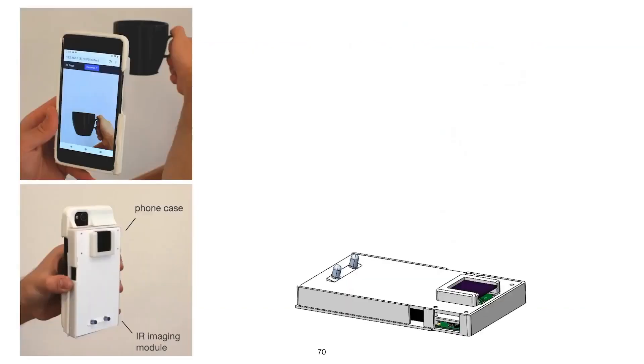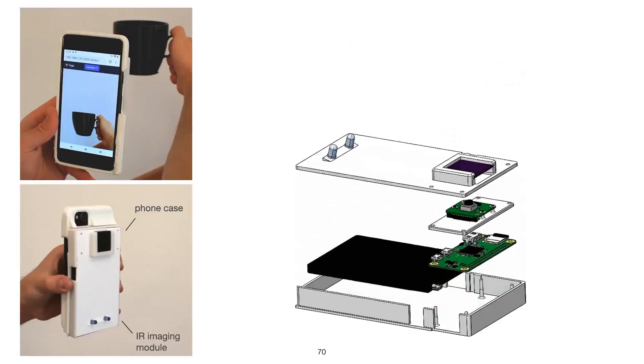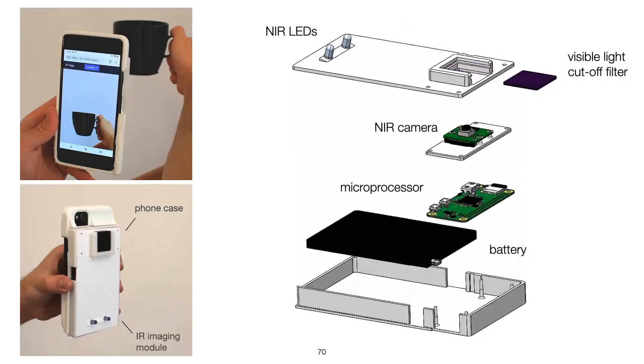Next, for detecting the tag, the user can attach our infrared imaging module to their smartphones. The module consists of low-cost components, as shown here. This module is not necessary if you have a smartphone that already comes with an IR camera, such as OnePlus 8 Pro.